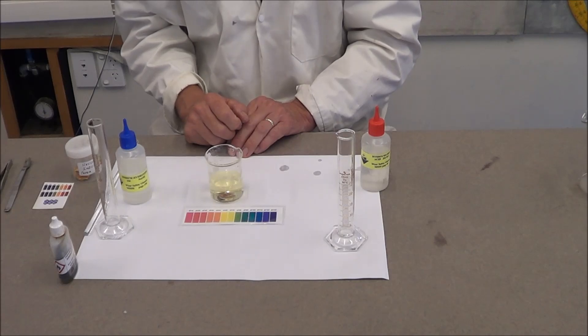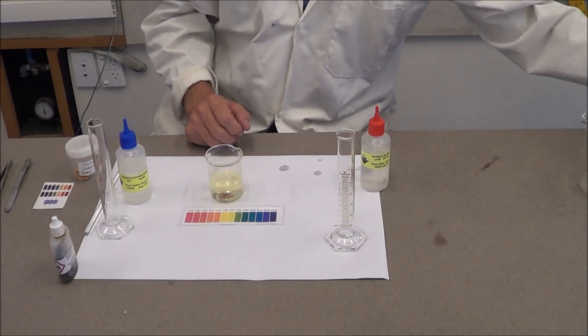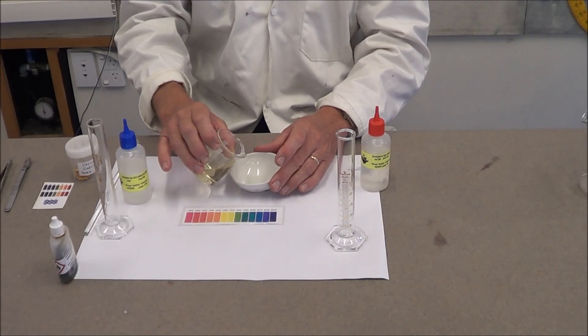To get our solid sample of the salt that's formed, we'll need to place this into an evaporating dish and place it over the heat and boil it for one minute.